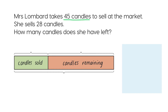She took 45 candles to the market, so we can write 45 here to show the total number of candles she had. We also know she sold 28 candles — write 28 here. To find the number of candles she had left, we subtract 28 from the total 45.